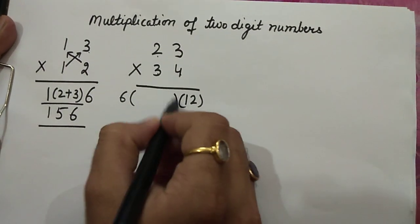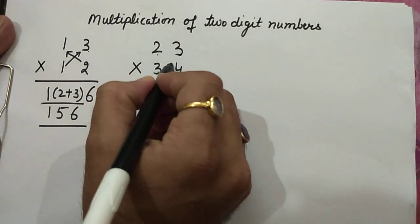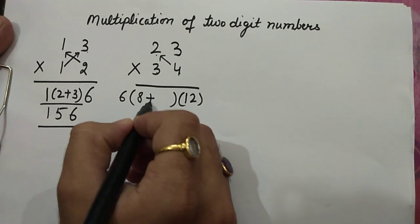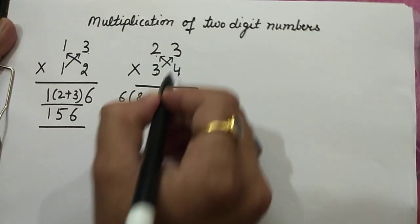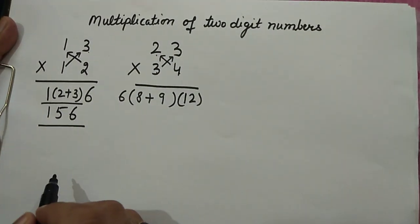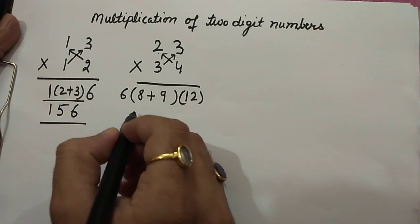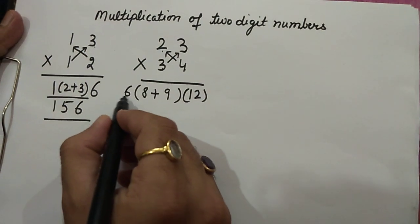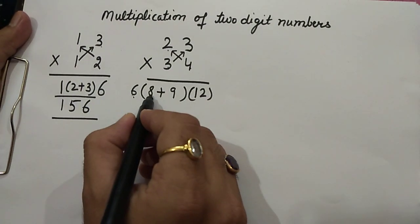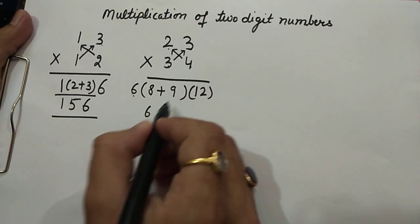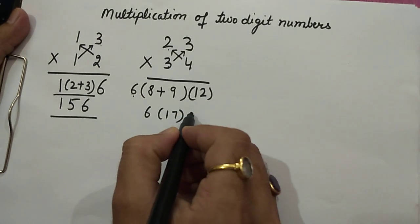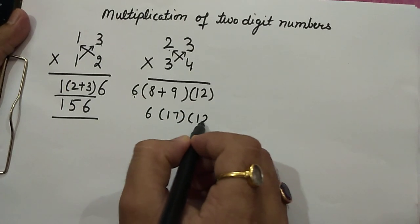In between: 4 into 2 is 8, plus 3 multiply 3 is 9. Let's see now what we get — 6 as it is, then 8 plus 9 is 17, and this is 12.